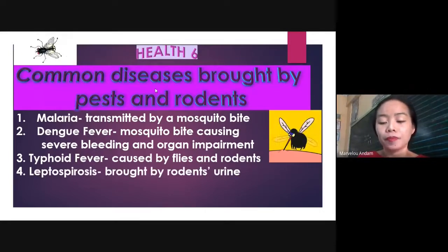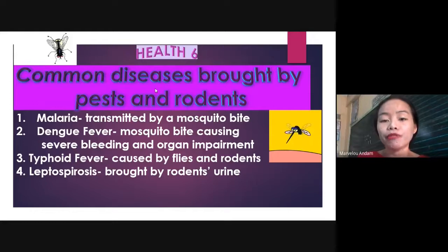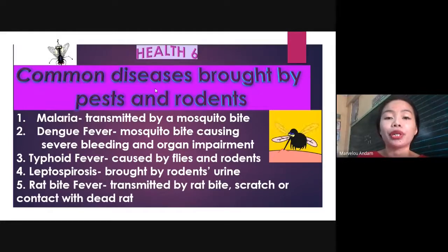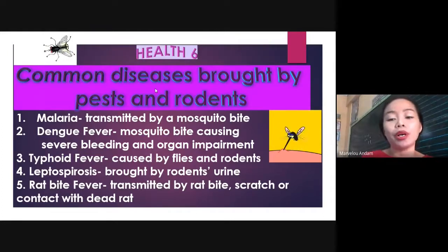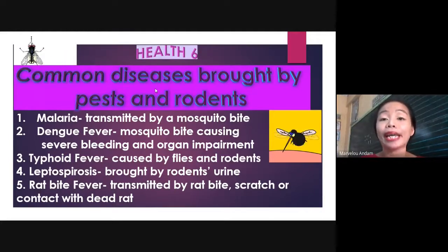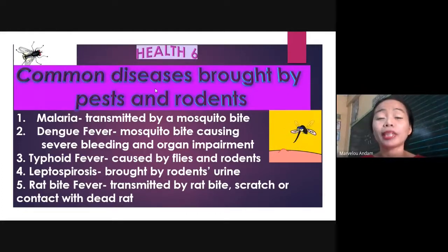Leptospirosis — it is a very common disease especially during rainy seasons. This is a bacterial disease brought by direct contact to water infected by rodents' urine. Next is rat bite fever — it is transmitted by rat bite, rat scratch, or contact with a dead rat. As I have said, pests and rodents constitute health and safety hazards; they can damage properties and contaminate food and water that may cause and spread illnesses.